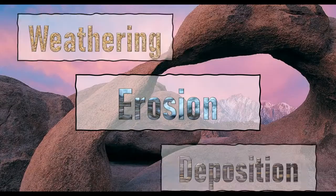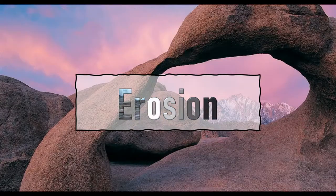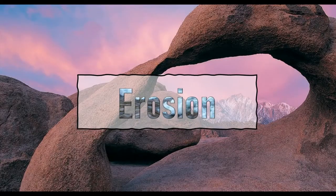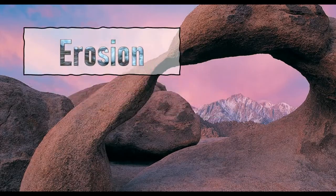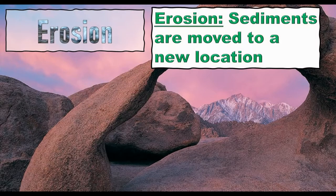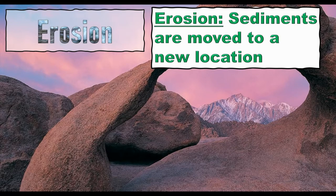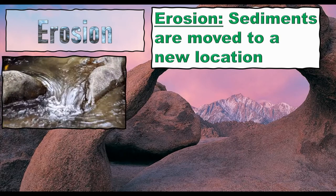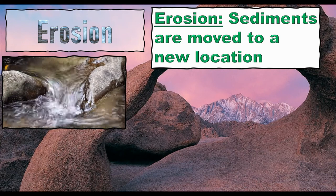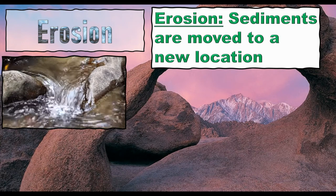Next, let's talk about erosion. Erosion is what happens when sediments are moved to a new location. So in weathering we broke up a rock into sediments, and now we're going to move those sediments someplace new.